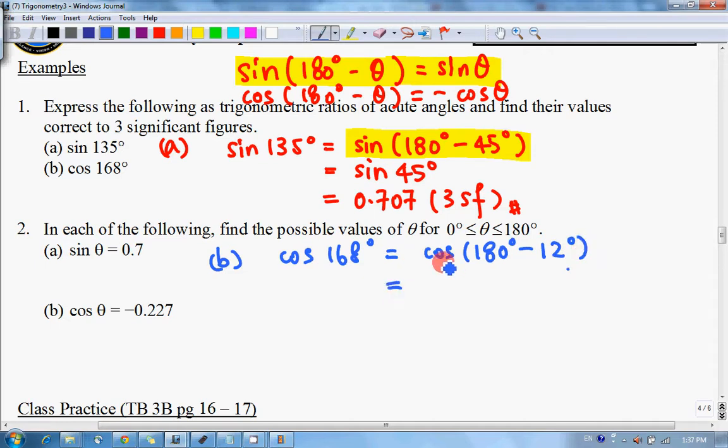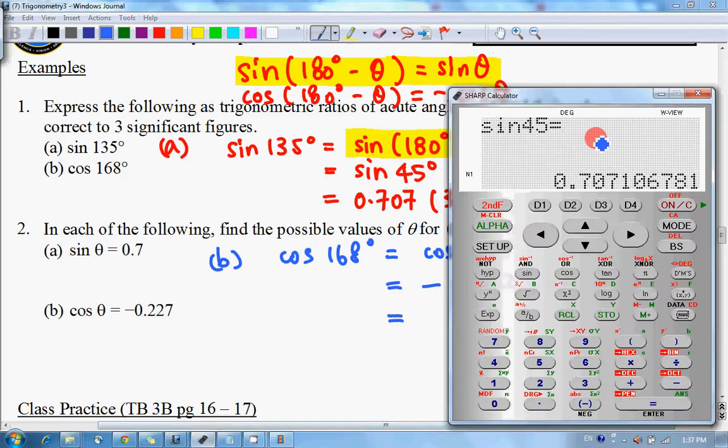Based on the formula, cosine 180 degrees minus theta will be equal to negative cosine theta. So again, use the calculator. Cosine 12 degrees is 0.978.